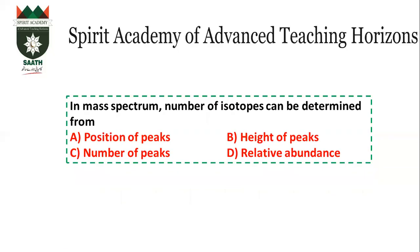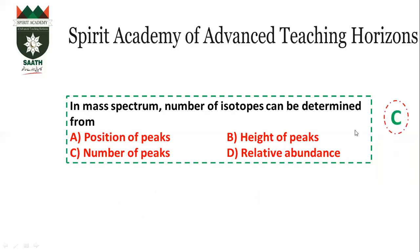In the mass spectrum, the number of isotopes can be determined from the number of peaks. The answer is C. The mass of the peak gives the mass of the isotope, and the height of the peak gives the relative abundance.